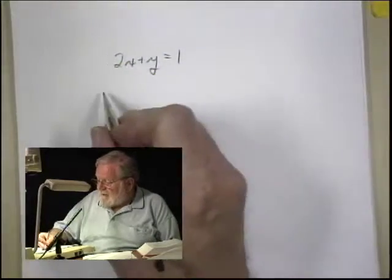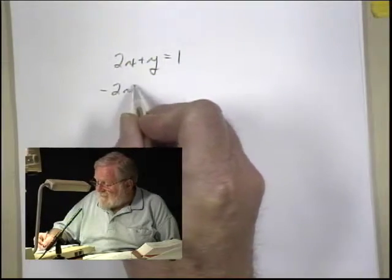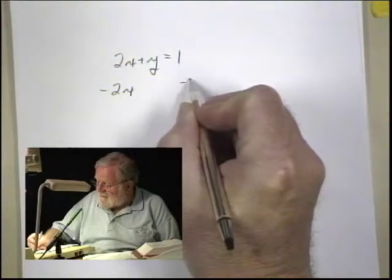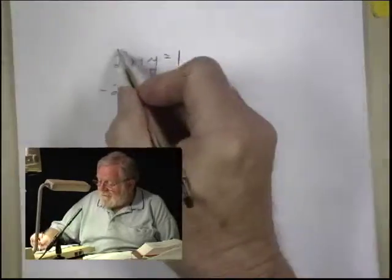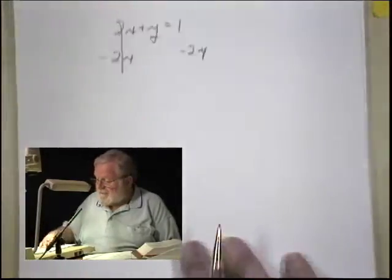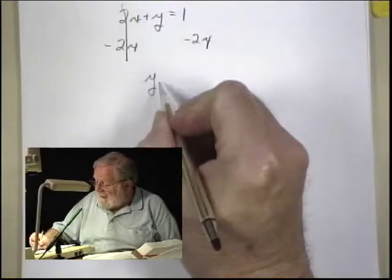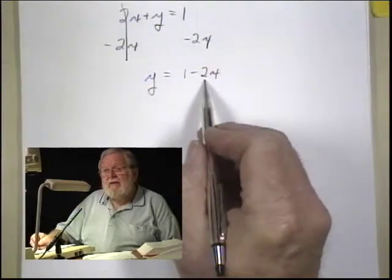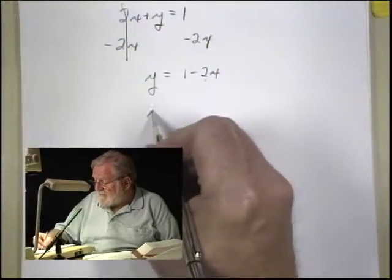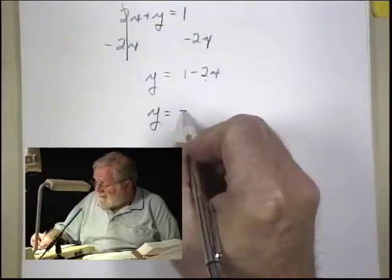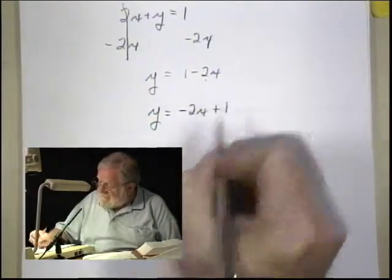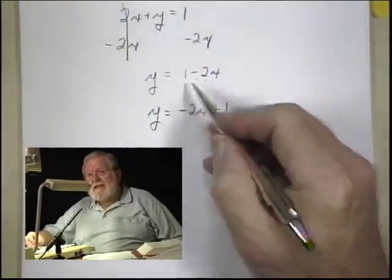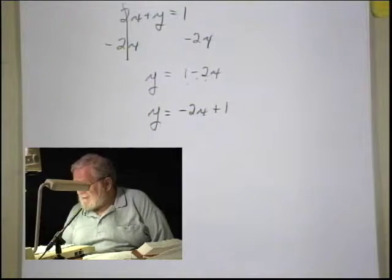So to do that, we're going to subtract 2x from this side and 2x from this side. And when we do that, this becomes 0, and we get y equals 1 minus 2x. And normally, we put the x term first, so this would be y equals minus 2x plus 1. We have to make sure we keep the correct signs.